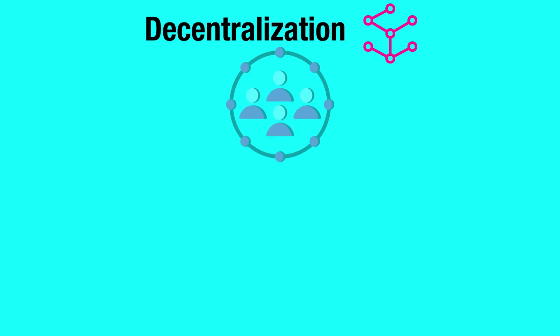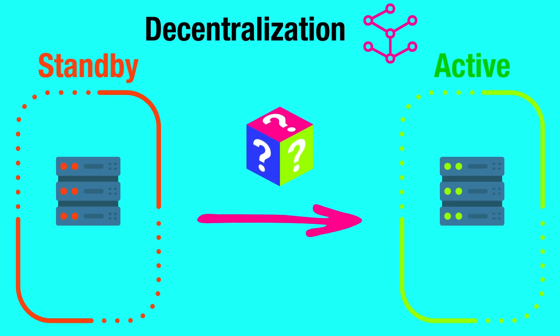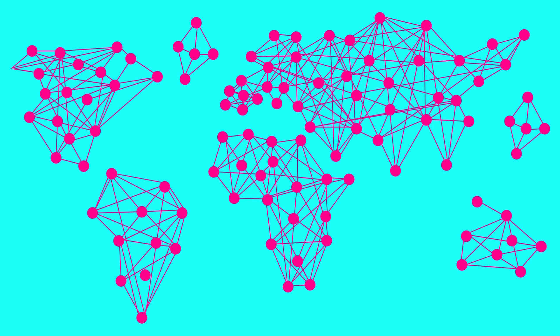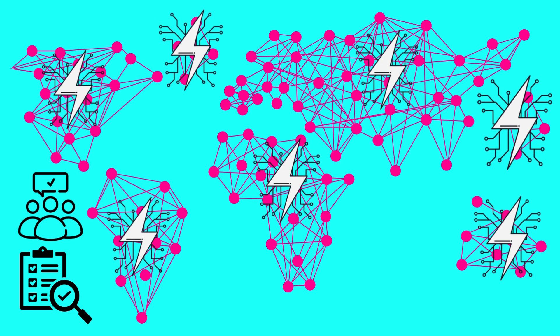Secondly, it enhances node decentralization by increasing participation opportunities. By transitioning nodes from standby to active status through a random selection process, Shardium ensures a wider distribution of participation in the network's consensus and validation processes. This method prevents the monopolization of these critical roles by a small group of nodes, thereby promoting a more decentralized network structure.